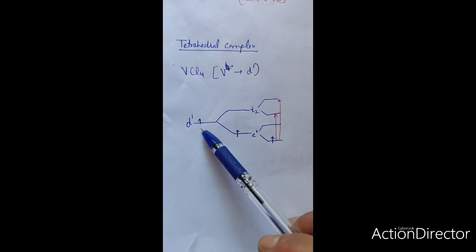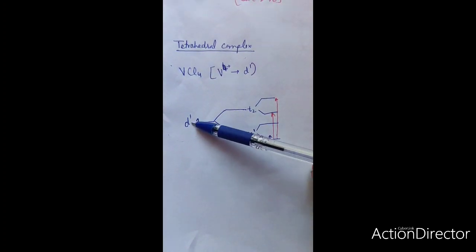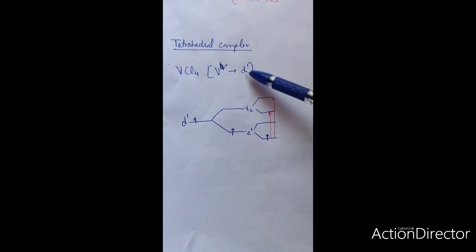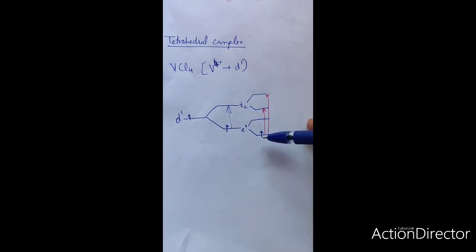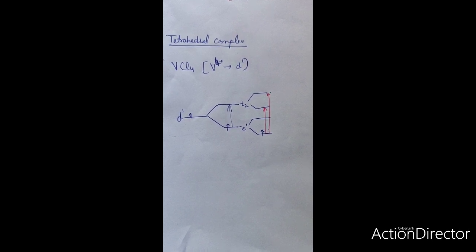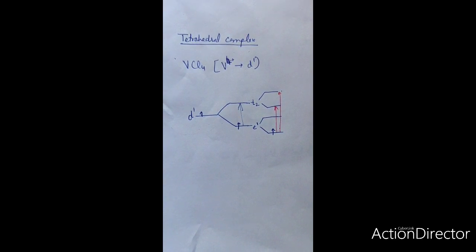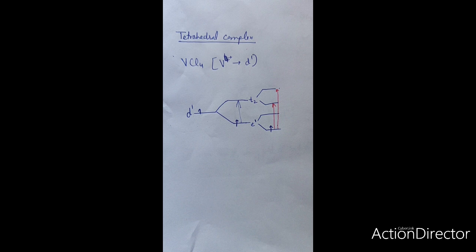Jahn-Teller distortion may also occur in D1 configuration of a tetrahedral complex. In VCl4, due to D1 configuration, there are two possible transitions — instead of one transition, there may be two. This gives a broad spectrum with a hump in the peak. This is how the Jahn-Teller effect affects the width of a transition metal spectrum. In case of transition metal complexes with D1, D6, D9, D8, or D4 configurations, the spectra may be broad or may have a shoulder along with the main peak.